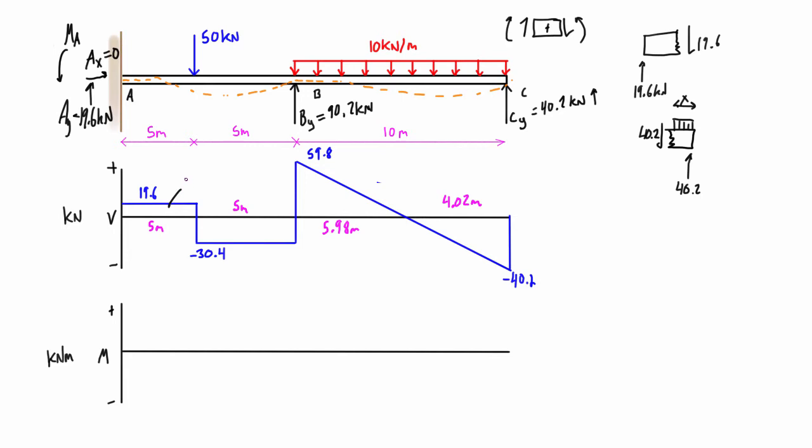And then we want to take the area of each of these. So this area is just going to be base times height. So 19.6 times 5 meters is going to be 98. And then this area in here is just going to be 152. Then the area of this triangle one-half base height is just going to be 178.802. And this area down here is going to be a negative value, negative 80.802. And these units of areas are all in kilonewton meters.